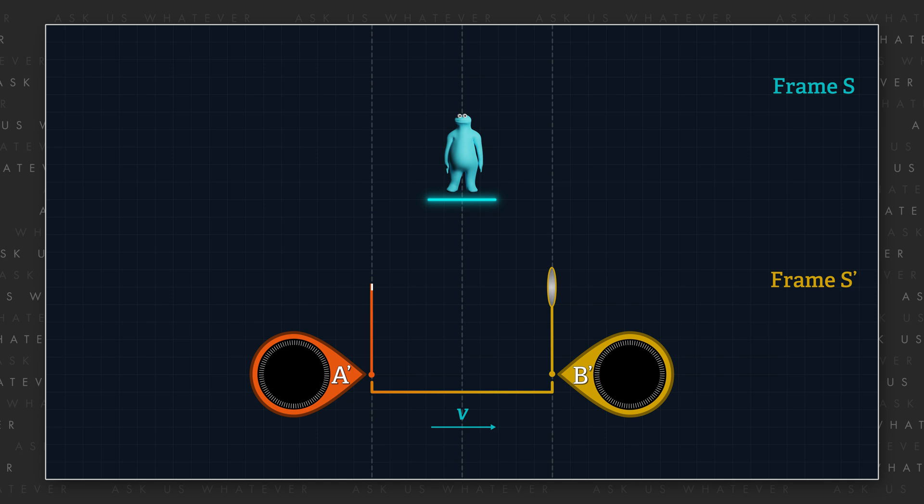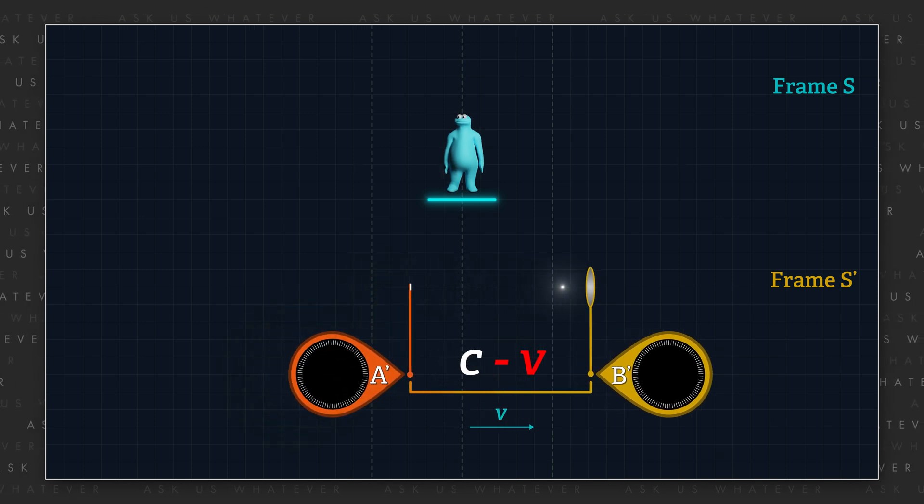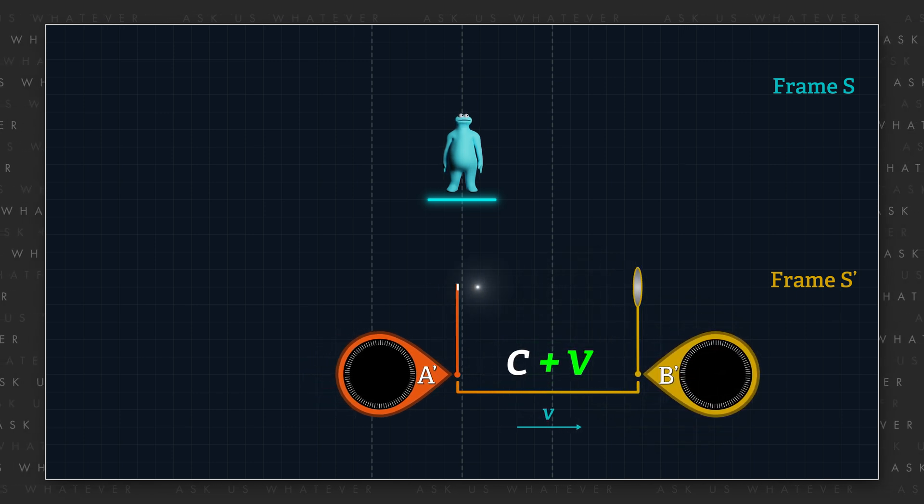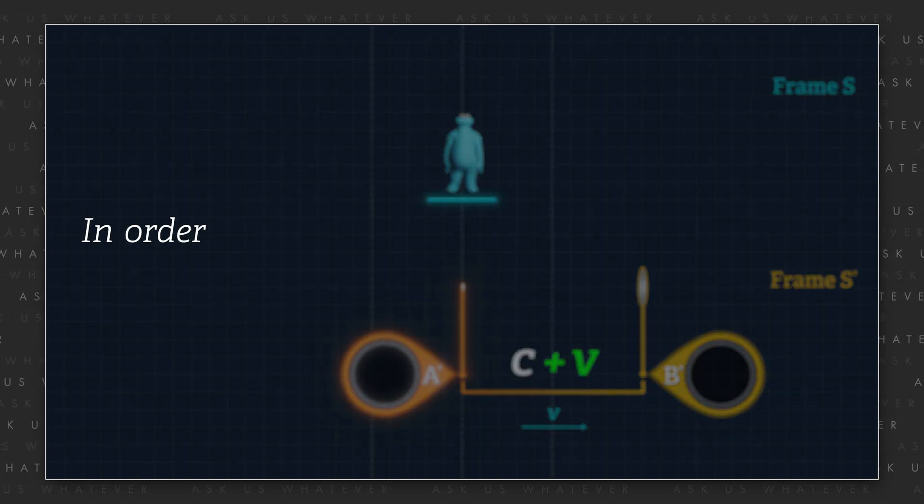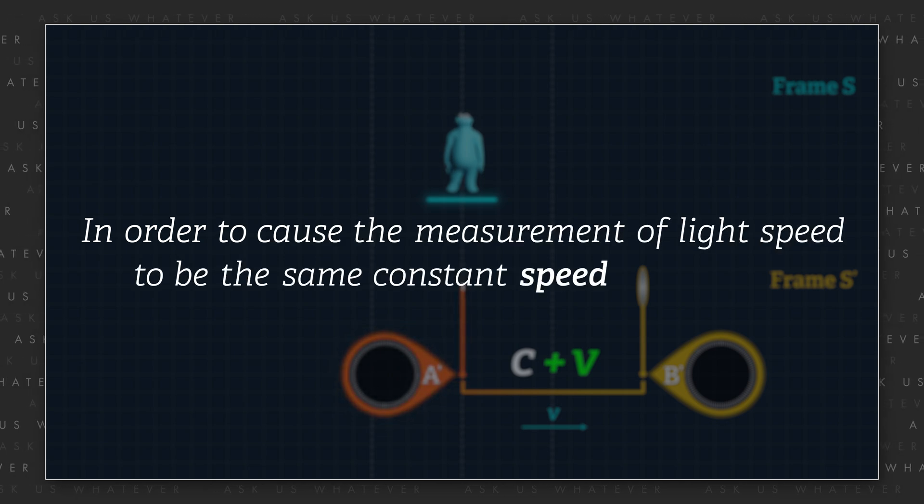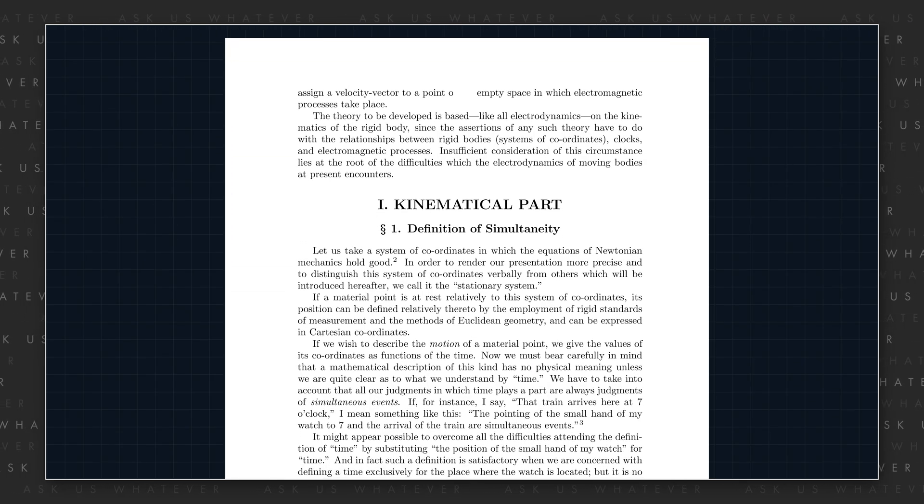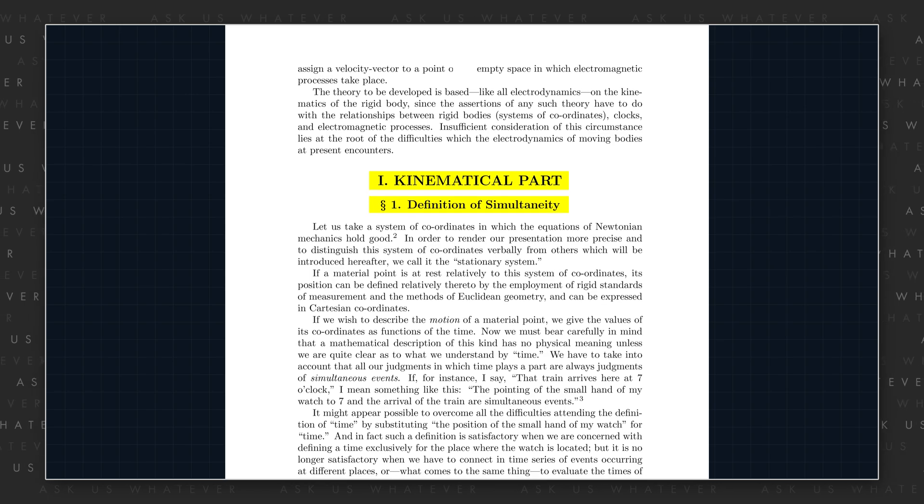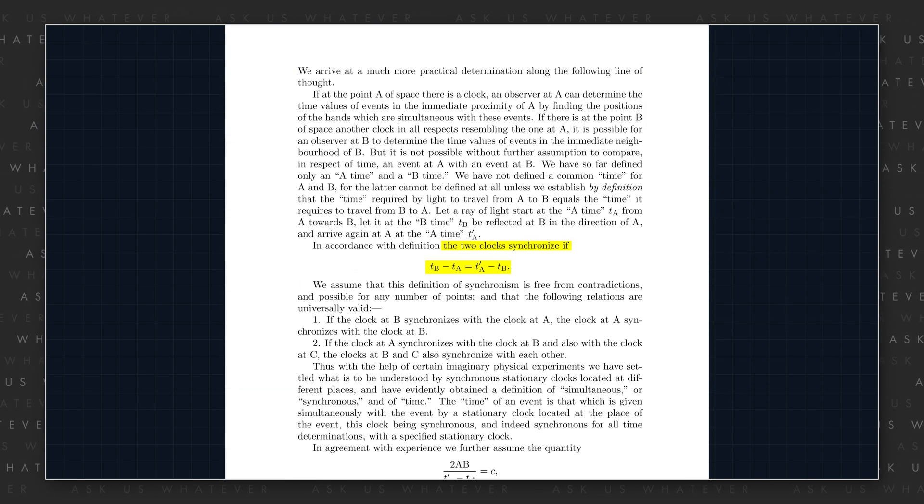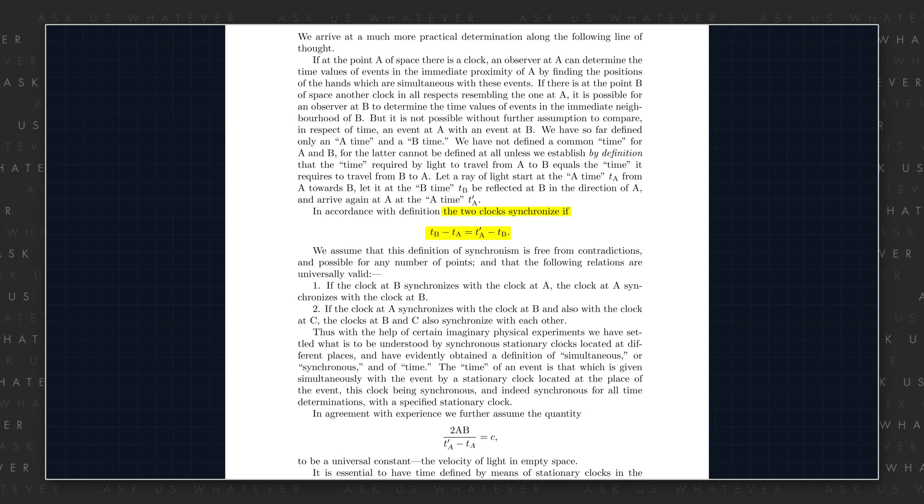Instead, light speed would be different in different directions—C minus V in the direction of reference frame motion and C plus V in the direction opposite to the direction of reference frame motion. So, in order to cause the measurement of light speed to be the same constant speed C in all reference frames, Einstein created a clock coordination method described in Section 1 of his 1905 relativity paper to adjust the clocks so that light speed measurements would produce the same result in all inertial reference frames.